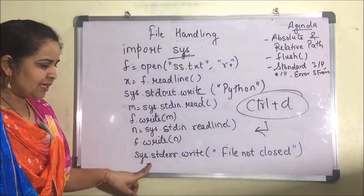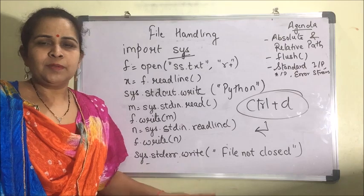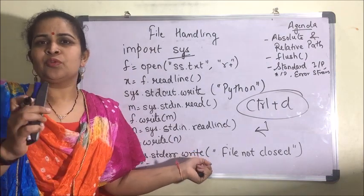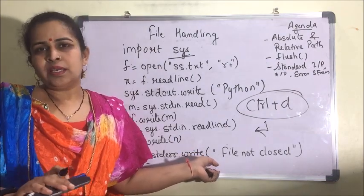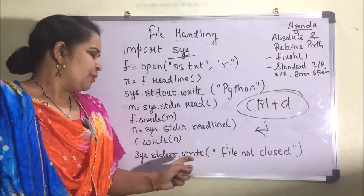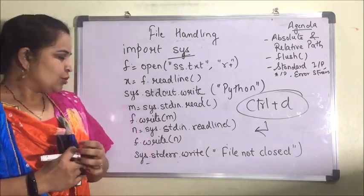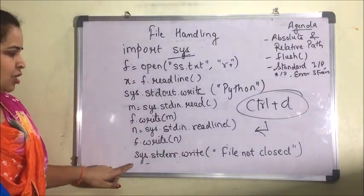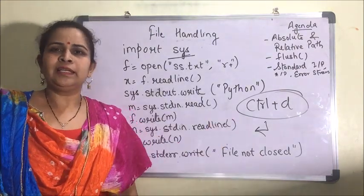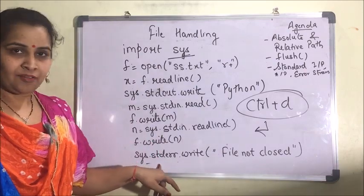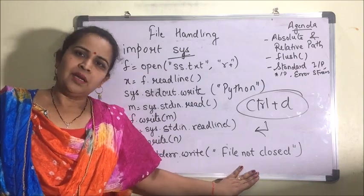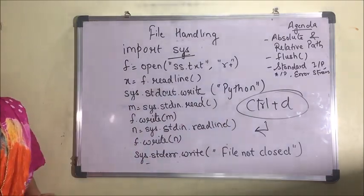The next one is sys.stderr.write. The difference between standard output and standard error is that since it is an error message, it is displayed in red color. Both streams write the message to the monitor, but standard error is displayed in red color. So if you want to highlight any message, you use stderr.write — it will display the message in red.